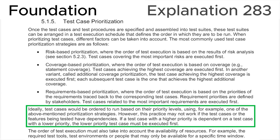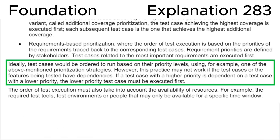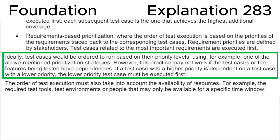Finally, let's look at section 5.1.5, test case prioritization, in the ISTQB syllabus. It states that ideally test cases would be ordered to run based on their priority levels using one of the mentioned prioritization strategies, although this may not work if test cases or features have dependencies. If a test case with a higher priority is dependent on a test case with a lower priority, the lower priority test case must be executed first.